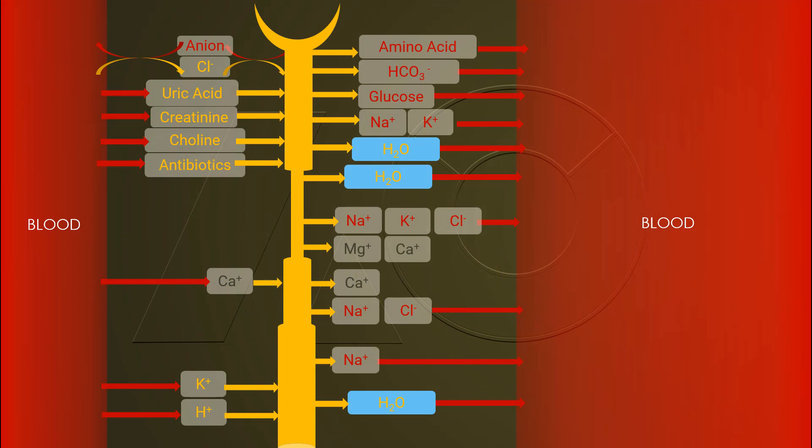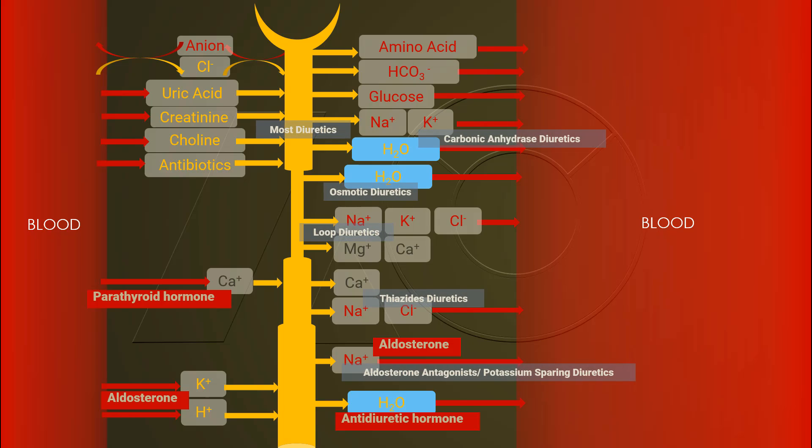This is the diagram that depicts what we have just discussed in this lecture, the movements of fluid and electrolytes, hormones and their corresponding segments in the nephron. Finally, the specific diuretics and their target sites of a nephron.